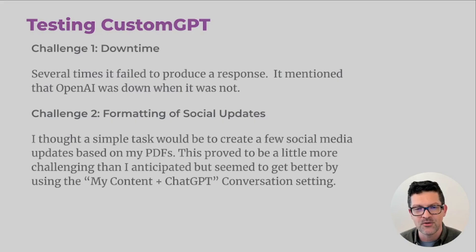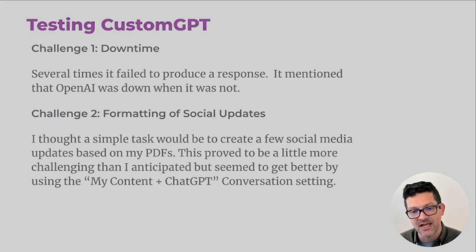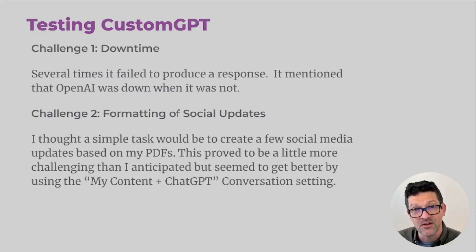I thought it would be pretty easy to just upload some information and say, 'Hey, create some quick social media updates from this data, from these different PDFs,' etc. And it didn't really work very well for that right out of the box. But then when I flipped on that 'my content plus ChatGPT' mode and began testing it, that's when I found that was a pretty useful feature. It started to get better and better results where you're using all of the ChatGPT knowledge base in conjunction with your own knowledge base that you've uploaded. With some testing, I was able to work through some of those challenges.